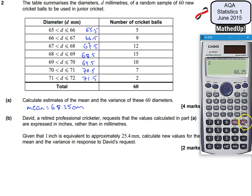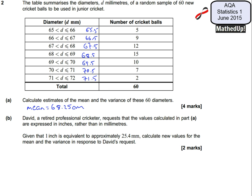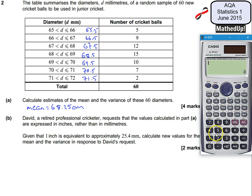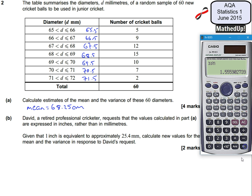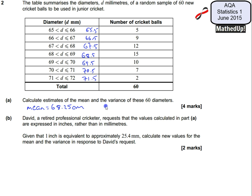To work out the variance I'll bring up the stat menu again and choose number 5, then option number 3 which gives me sigma, my standard deviation. I square that value of sigma to get the variance, and that gives me 2.42. So my variance is equal to 2.42.